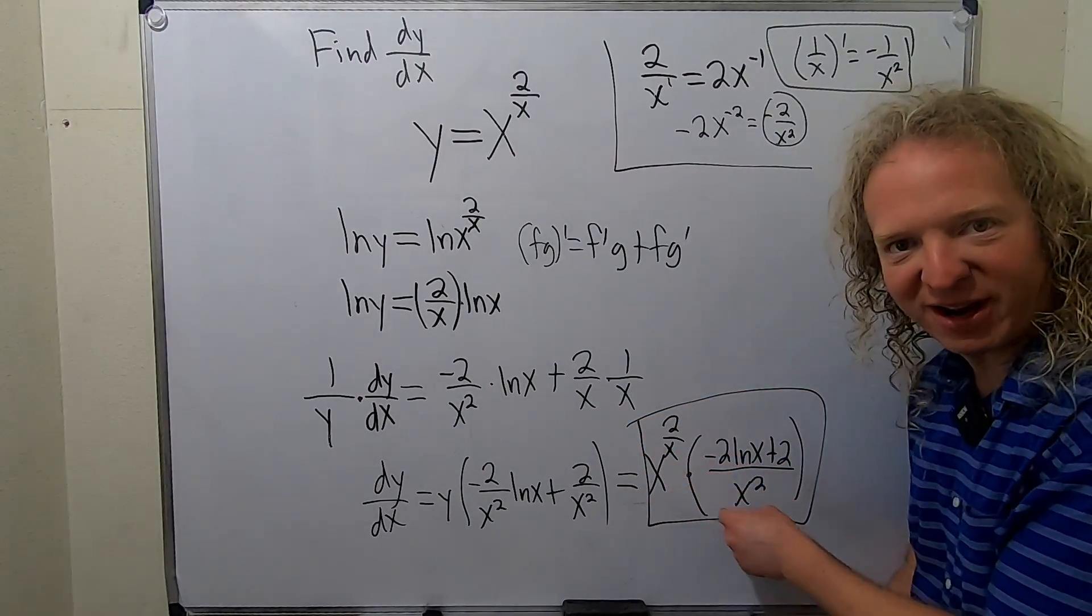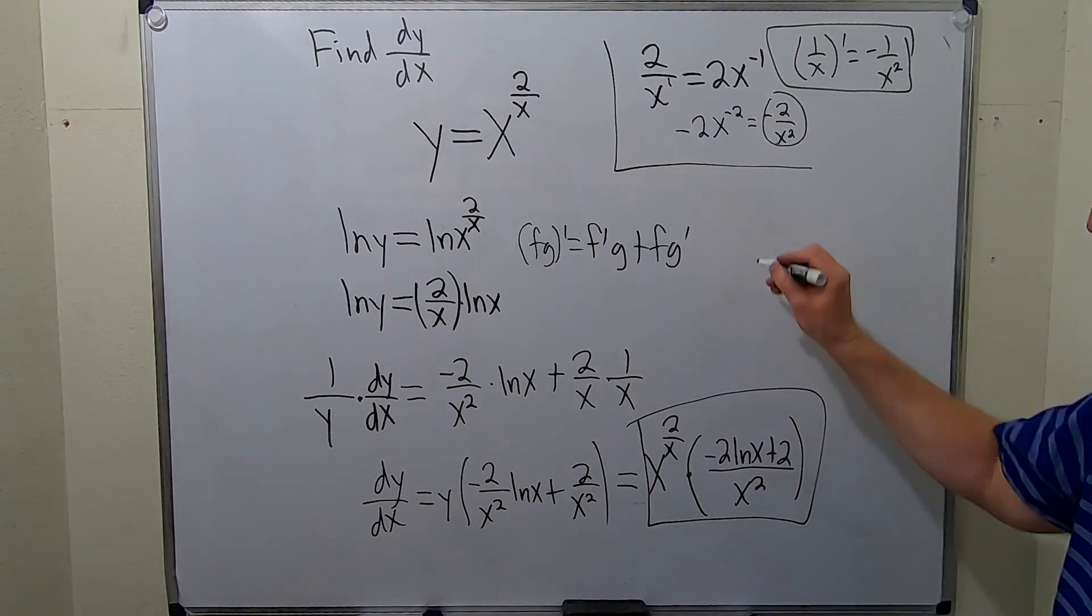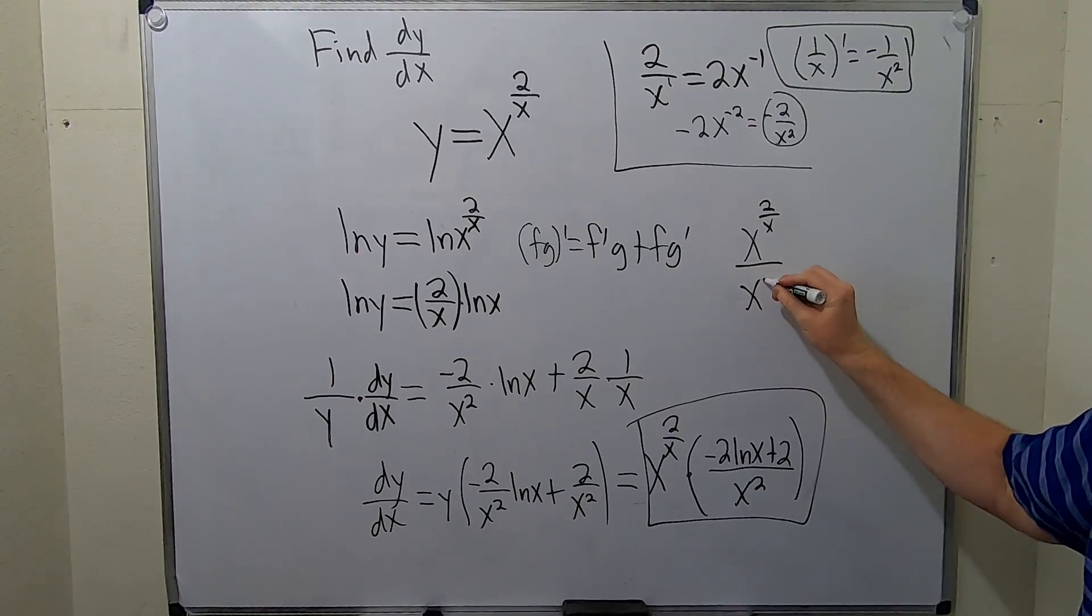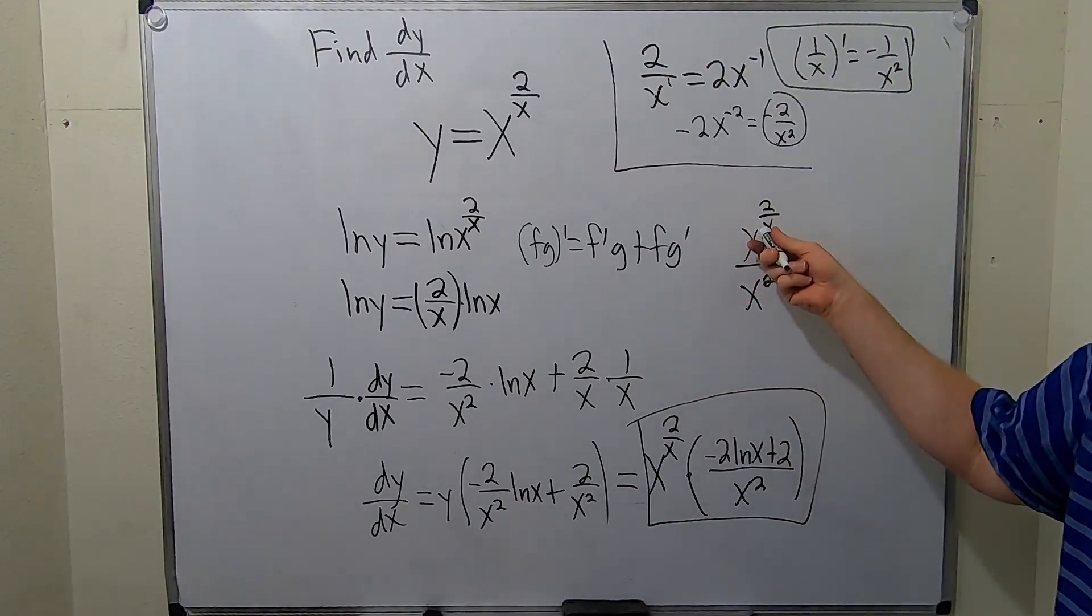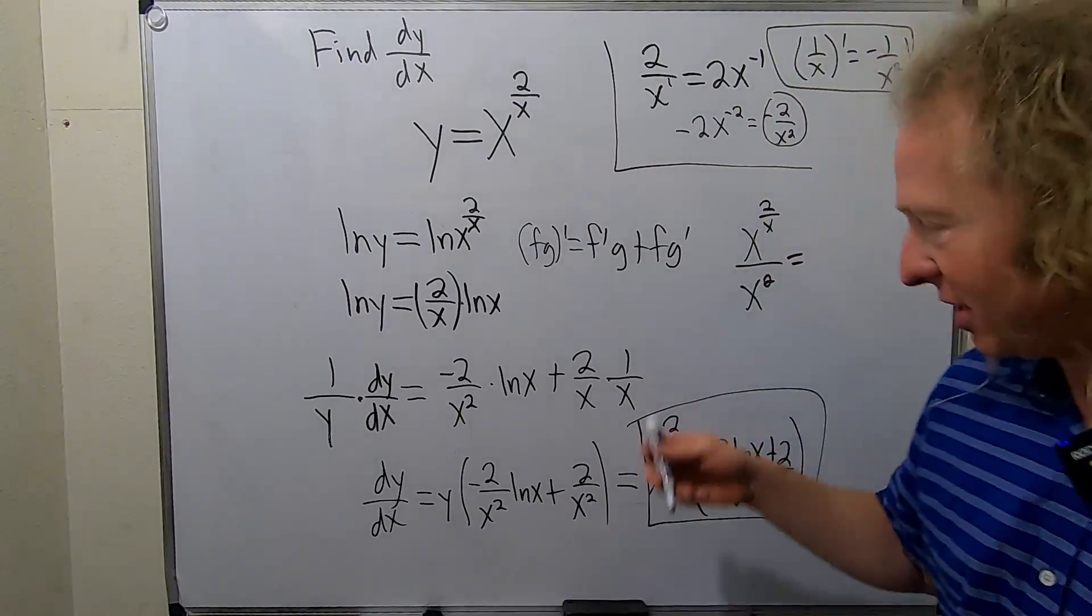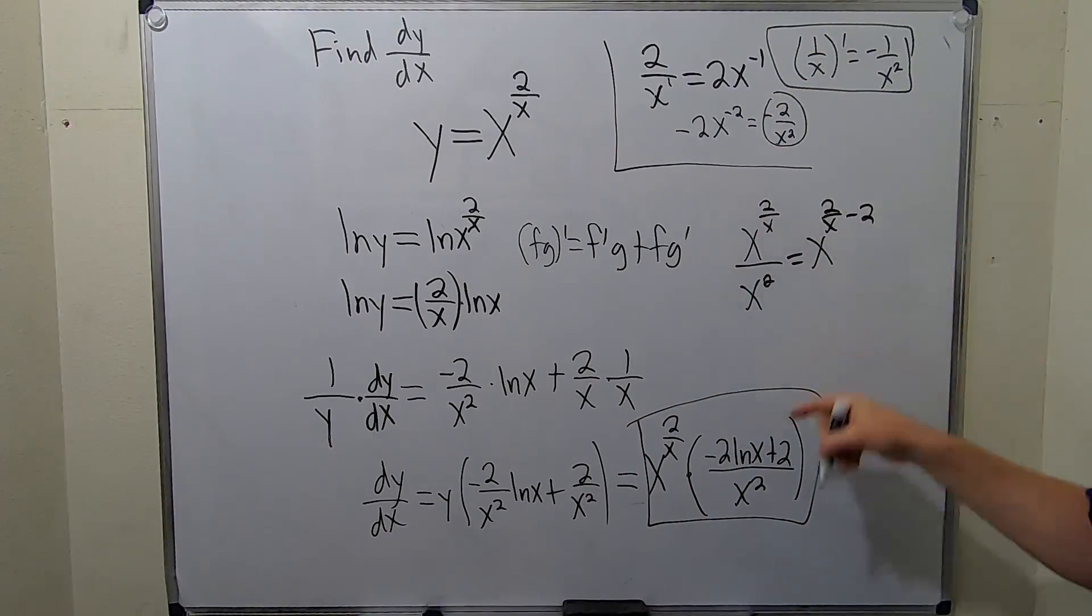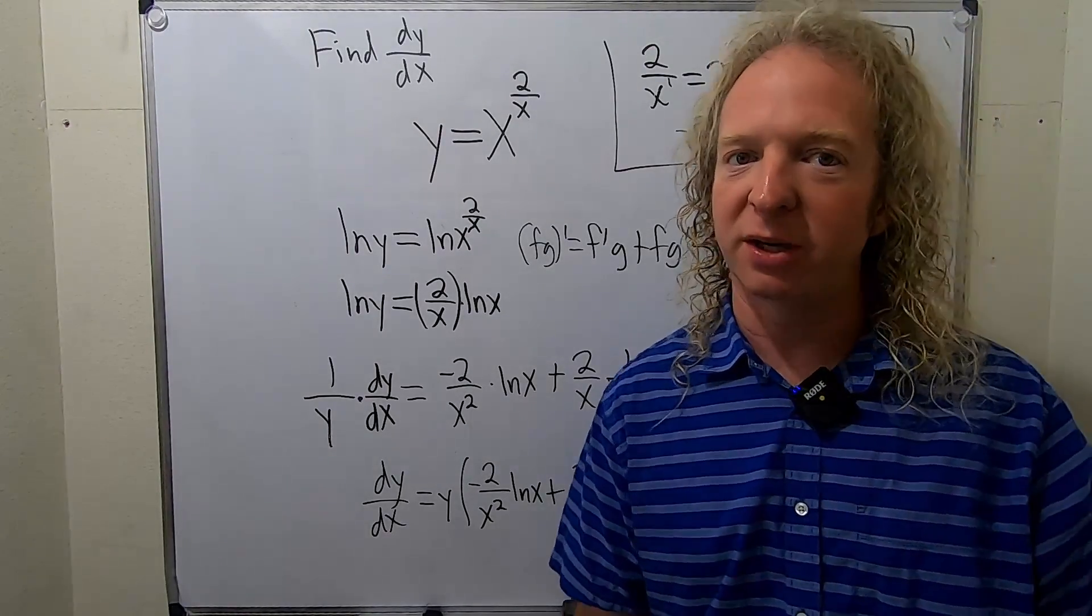You could simplify the x's here. In particular, if you have x to the 2 over x over x squared - this is pretty wild - but we'll just leave it like this. But you could do this: you could subtract the exponents. So you get x to the 2 over x minus 2. So you could write it like that and then have this left over. But I'll leave it like that. I hope this video has been helpful. Take care.